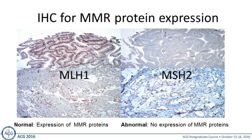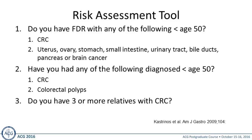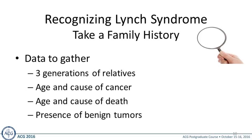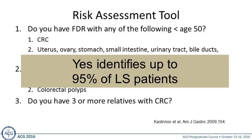To make the diagnosis of Lynch syndrome, taking a family history is critical. It should include cancer types, ages of diagnosis, ages of death, and three generations of relatives, including both benign and malignant tumors. A quick risk assessment tool with three questions can be very helpful: Does a first-degree relative have colorectal or Lynch-related cancer under age 50? Have you had colorectal cancer or polyps under age 50? Do you have three or more relatives with colorectal cancer? Answering yes identifies 95% of patients with Lynch syndrome.